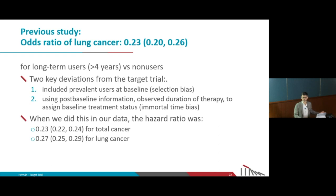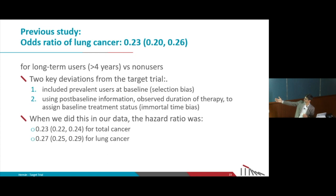That is something we would never do in an experiment. In a trial, we assign people to different groups based on what they do at baseline, not based on what they do over the next four years. That is a recipe for immortal time bias. And in fact, when we do that same thing with our own data, we also find hazard ratios of 0.2 or 0.3 — but they are completely biased. When we do the natural thing — the emulation of a target trial — the hazard ratios are 1.